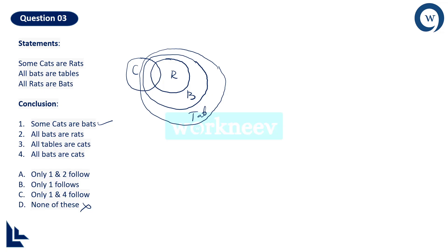All bats are rats — if true, bat has to be inner circle and rat outer circle. But in our diagram it is the reverse, so the second conclusion is definitely wrong. I can eliminate option A because it says conclusion two also follows. All bats are cats — if true, bat has to be inner circle and cat outer circle, which is also not found here. The fourth conclusion is also wrong. The only correct answer is option B — only conclusion one follows.